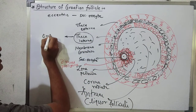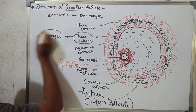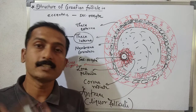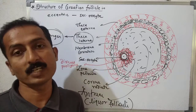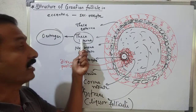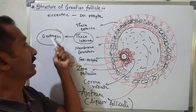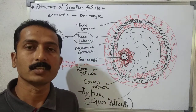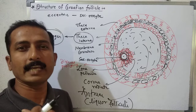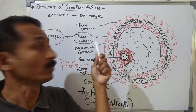The antrum is the empty cavity between the secondary oocyte and membrana granulosa, filled with liquor folliculi. The theca interna layer secretes the female hormone estrogen, which maintains secondary sexual characteristics in females.